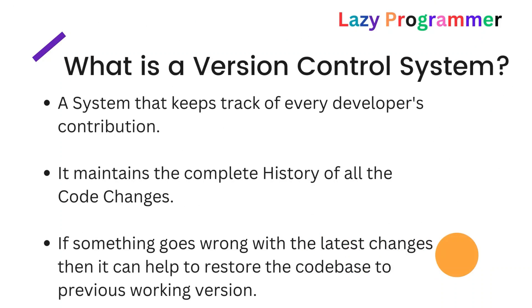What exactly is a version control system? It is a system that keeps track of every developer's contribution and maintains the complete history of all the code changes. Suppose you are working on a project with your team and every developer is working on some different set of features, making their own changes and committing them to one particular software known as the version control system.